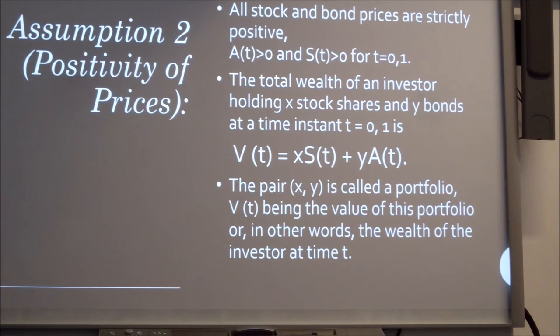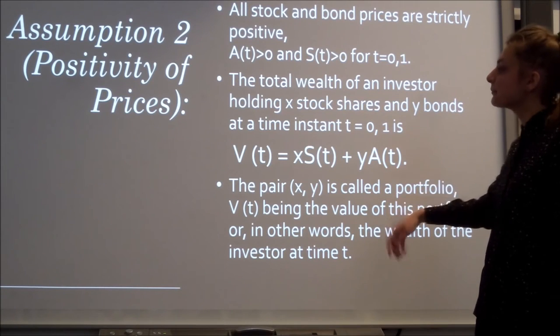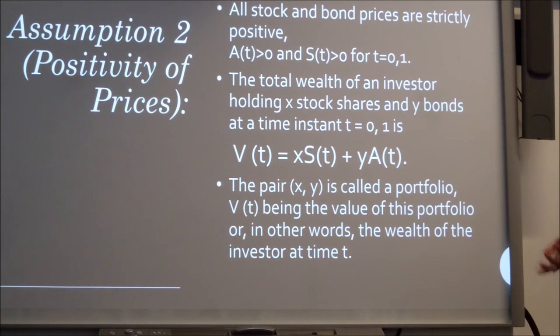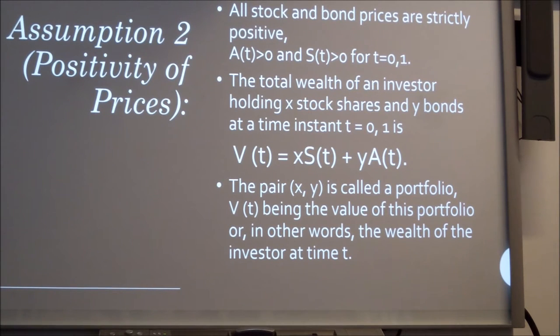The positivity of prices. It wouldn't make sense for an investor to buy something with a negative price, because that would essentially mean they would be giving out money for you to take it on. So the price of the stock and the price of the bond will always be greater than zero. And as an investor, you want a mixture of both stocks and bonds, because bonds are reliable, whereas stock gives you hope for the greater return, because of greater risk you get greater returns. The total wealth for an investor can be calculated by VT equals XST plus YAT, and this is called the portfolio value. Based on how many stocks you have and based on how many bonds you have, you can calculate the total wealth for an investor at any given time T.